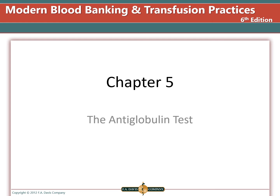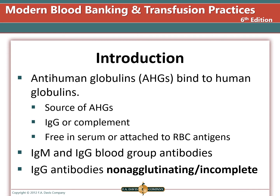The anti-globulin test, also known as the Coombs test. An anti-human globulin or AHG is an antibody that is against human antibodies. The source is a non-human species immunized with human globulin such as IgG or complement. So we inject the antibody or complement into an animal and the animal makes anti-human antibodies. These antibodies can bind to either free antibodies or to those bound to red blood cells. IgG are termed non-agglutinating or incomplete antibodies because they are too small to directly agglutinate sensitized red cells the way IgM antibodies do.